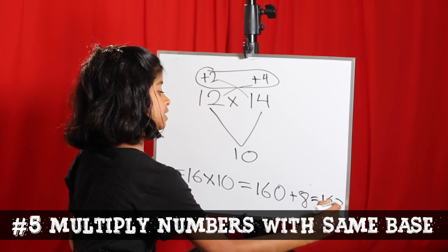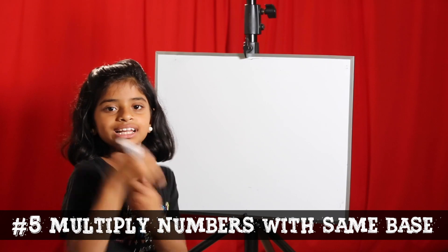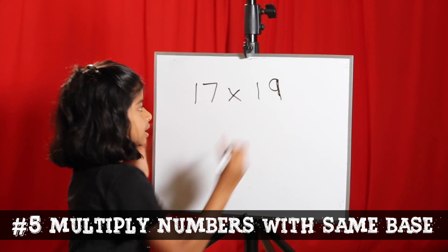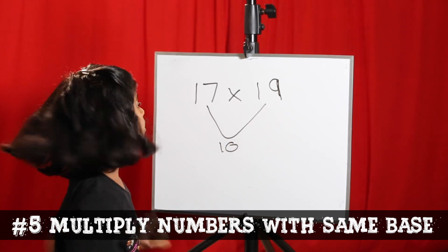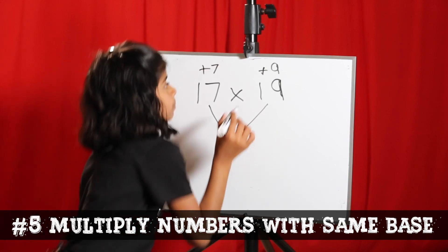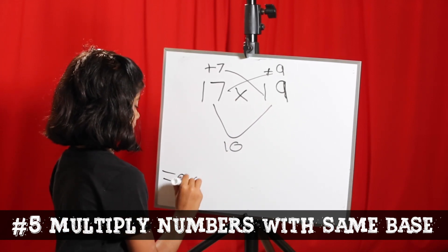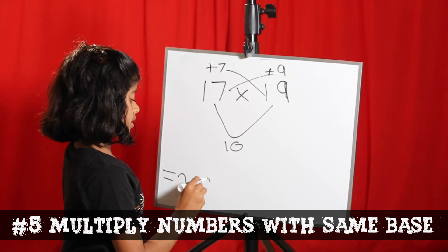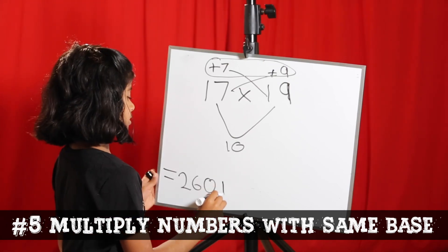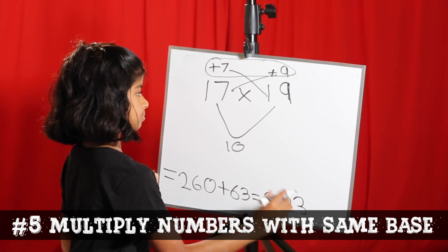If that was a bit complicated, don't worry. Let me explain it again with different numbers. Let's multiply 17 into 19. As you can see, they both have the same base which is 10. Then they have a plus 7 and a plus 9. Now if you remember, we have to add these two numbers or these two numbers. Either way, it's 26. Then you have to multiply it by 10 and it's 260. Now you have to take these two numbers and multiply them. That is 63. Then you add the numbers together and you'll get 323. That was simple.